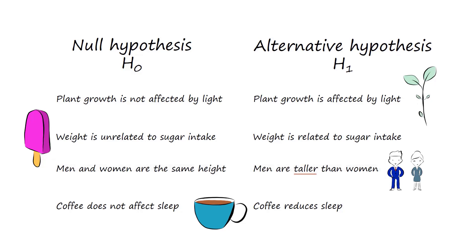Have a look now at the final example about coffee and sleep. Is this a one-sided or two-sided hypothesis? Notice the word reduces. This means we are hypothesizing coffee will reduce the amount of sleep. Therefore, this is a one-sided hypothesis.